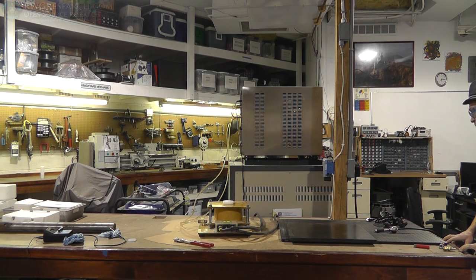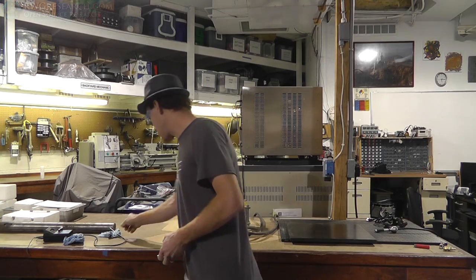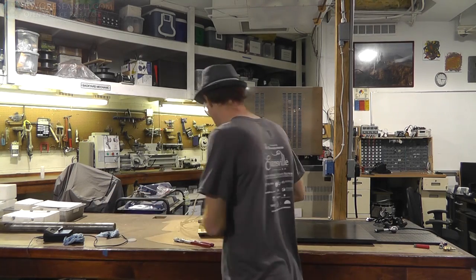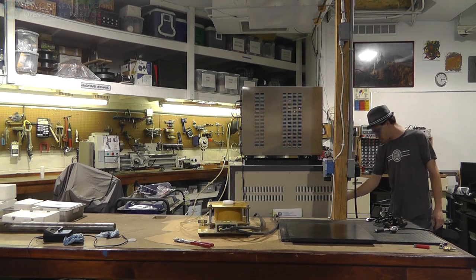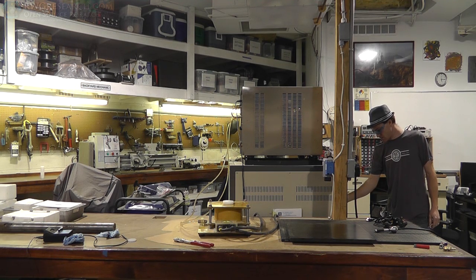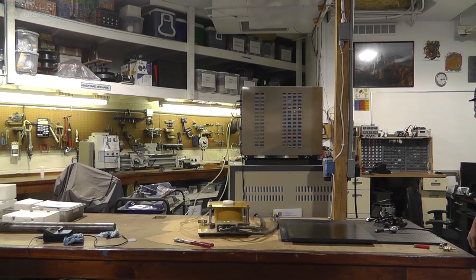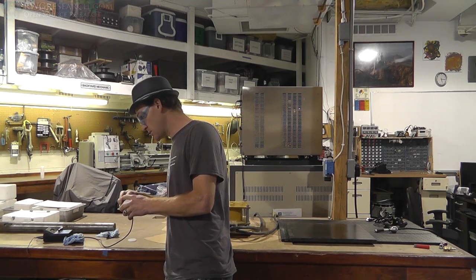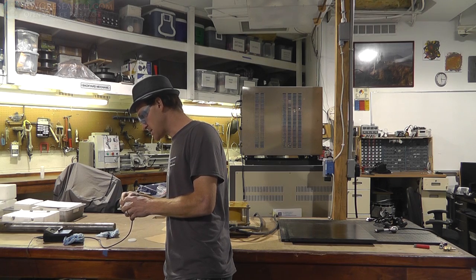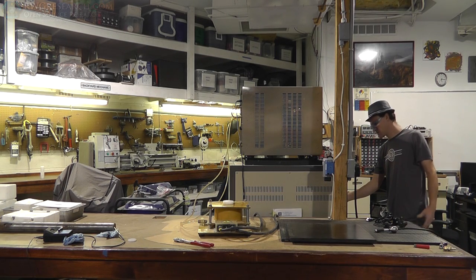There it goes. All right, 1.16. Still a negative number. I'm going to turn the chiller on. All right, let's go 500 volts. There it goes. 1.45 kiloamps. Still a negative number. I can still achieve negative 4.7.